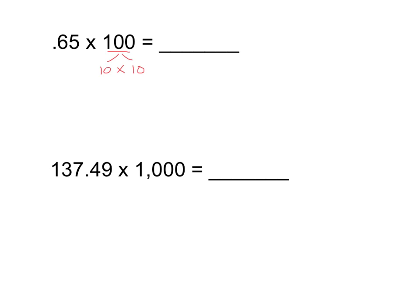We want to know how much money they're spending on 100 candy bars if each one costs 65 cents. We have 65 hundredths, and because I'm multiplying by 100, I'm going to move my decimal place to the right twice — once for the first times 10, and again for the second times 10. My decimal place ends up here, so the answer is 65. In other words, the store would be spending $65 to buy 100 candy bars at 65 cents each.